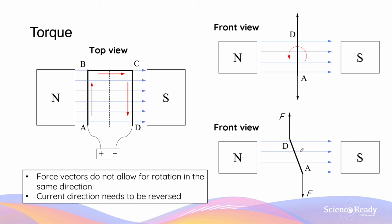This is a problem because these two force vectors will cause the armature to rotate in a clockwise direction — the opposite to our previous anti-clockwise rotation. So the force vectors here do not allow for rotation in the same direction.